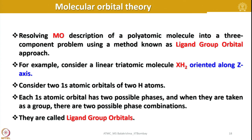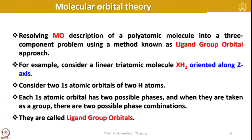Let us consider a triatomic molecule such as water oriented along the Z-axis. Consider the two 1s atomic orbitals of the two hydrogen atoms — each 1s atomic orbital has two possible phases, and when they are taken as a group there are two possible phase combinations. We essentially call them ligand group orbitals, whether we have two, three, four, or many — we can apply this ligand group orbital concept.